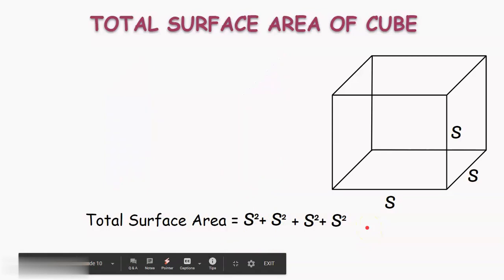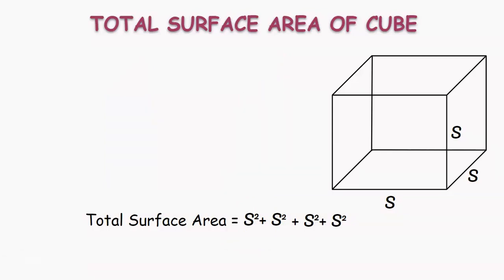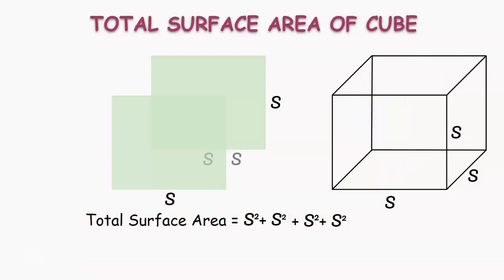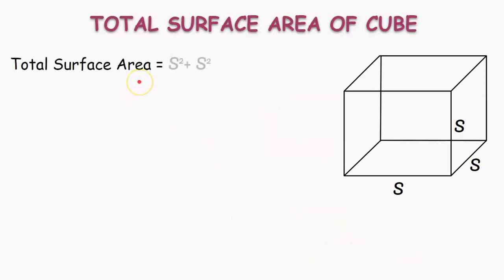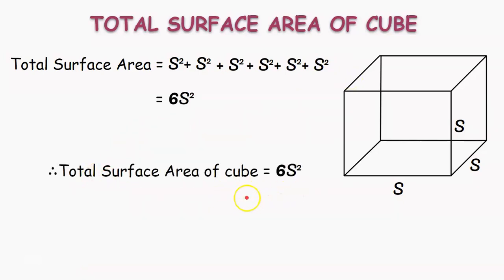Now, let us take another pair of opposite faces, which are the back face and front face, with each side as S. Therefore, the area of these two faces are also S square each. By adding these areas to the previous areas, we get the total surface area of the cube as S square plus S square plus S square plus S square plus S square plus S square, which is 6S square. Therefore, total surface area of the cube is 6S square.